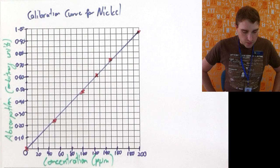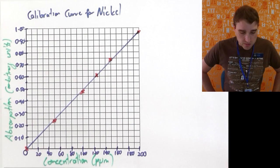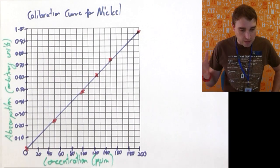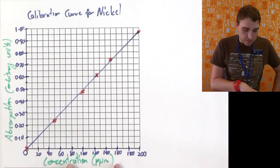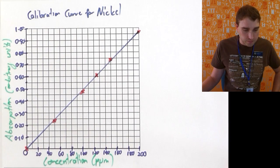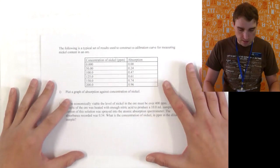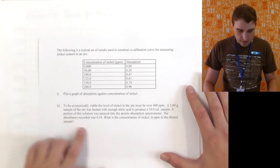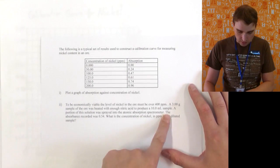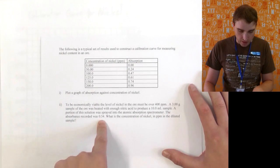Now, what we're going to do is we're going to look at the second part of the question, which says we have an unknown, so we've got a known absorbance, so we can figure out the unknown concentration of the nickel solution. So, here's the question again. It says, the absorbance of the sample was 0.54.